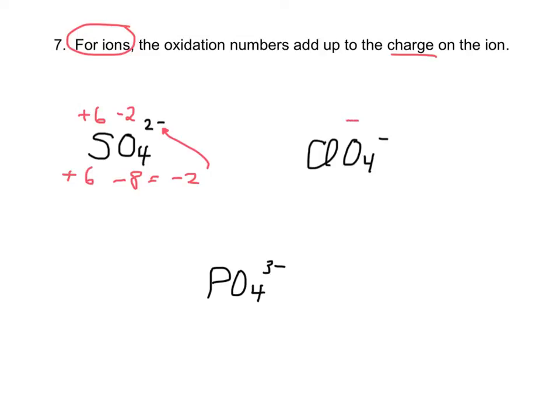Over here, for perchlorate, oxygen is -2. I've got a -8. The whole thing has to equal -1. So chlorine must be +7.